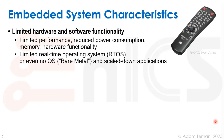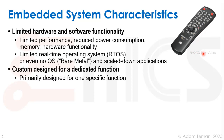The characteristics of embedded systems include limited hardware and software functionality, limited performance, limited power consumption, and limited memory. They will either have a very limited operating system — which may need to be real-time, such as an RTOS — or may run bare metal with no operating system at all. A remote control, for example, is only supposed to control a TV or similar device, with perhaps some ability to learn and memorize commands. These systems are usually custom-designed for a dedicated function.